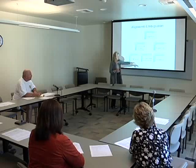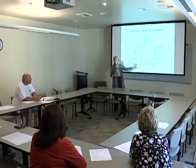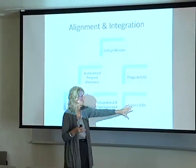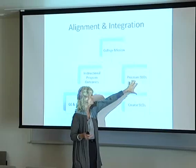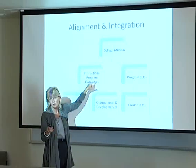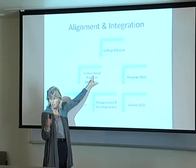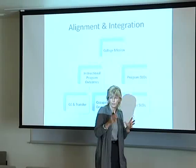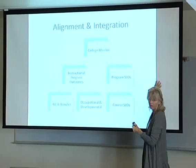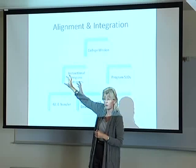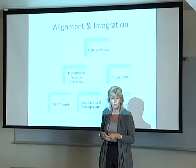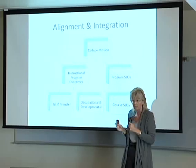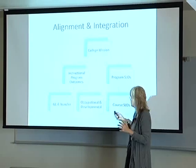Here's a visual flowchart of all of this. You have your courses — GE and transfer type courses, occupational and developmental courses — all of which have course SLOs and assessment plans. All courses are aligned with some program, and our programs have SLOs. There are also instructional program outcomes and general education outcomes. All of this links to the mission of our college — the whole big alignment. We do not want to have a course or a program just floating out, not attached to anything. Everything needs to relate and dovetail, and everything ultimately goes to the mission of our college.